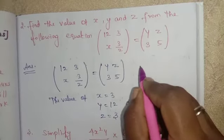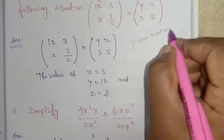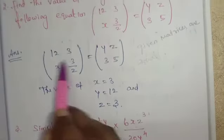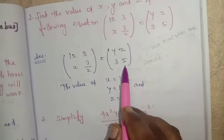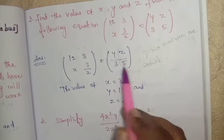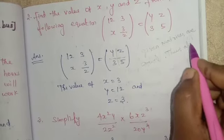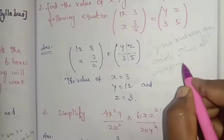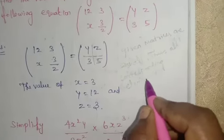Given matrices are equal. It is 2 row, 2 column on both sides, so all corresponding elements are equal.